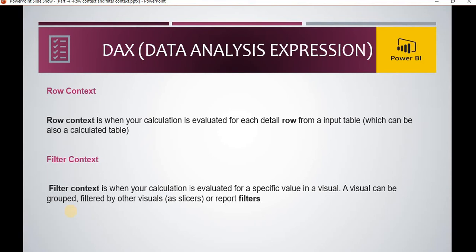Filter context is when your calculation is evaluated for a specific value in a visual. A visual can be grouped or filtered by other visuals or report filters. In Power BI, when we have multiple visualizations and we click on a particular criteria in one visual, all the other visualizations change accordingly — they get filtered. That is the filter context.